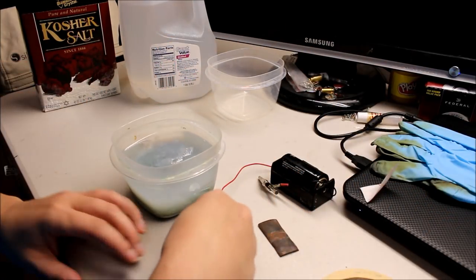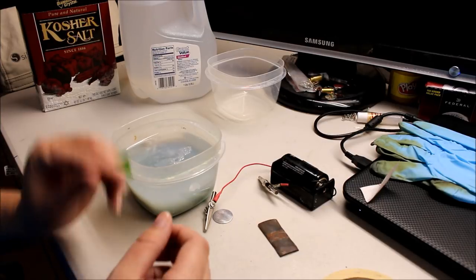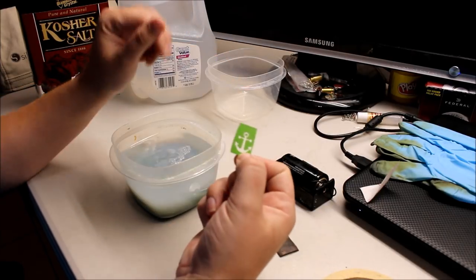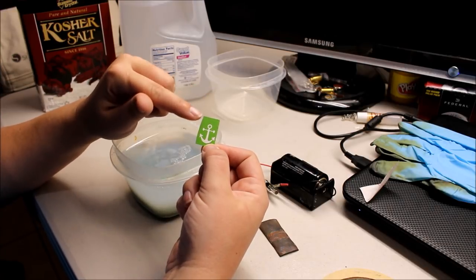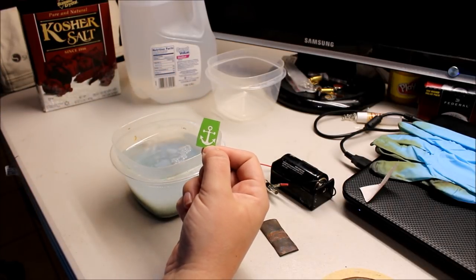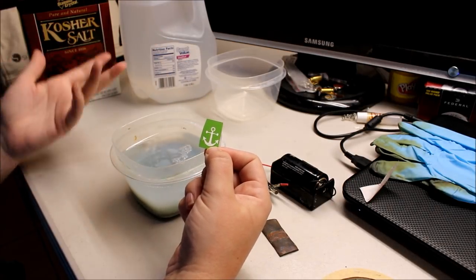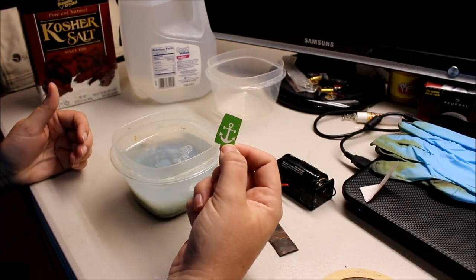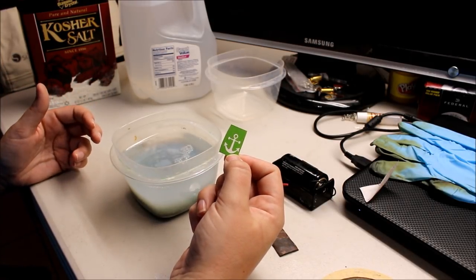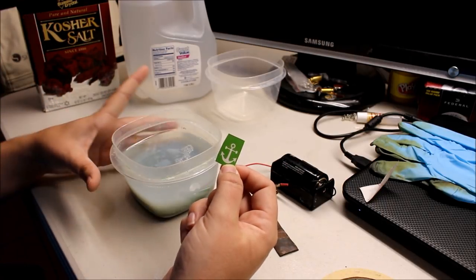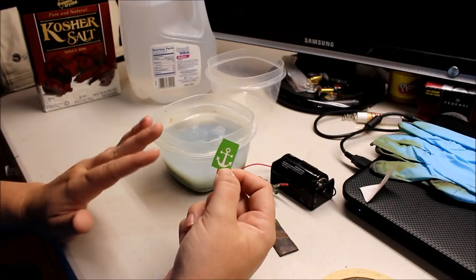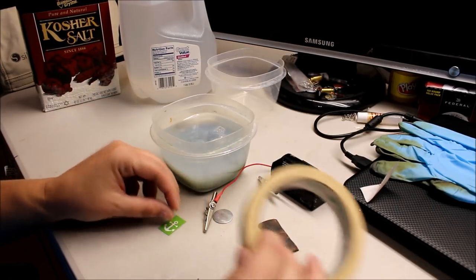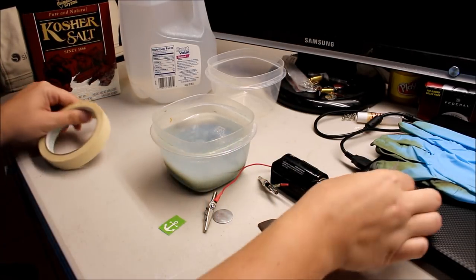So I've already cut my picture out, which is what the professional etchers call the resistance or something similar to that. I've already cut it out and weeded it. I have a Silhouette Cameo that I do it with. I use vinyl - you can use masking tape, some people do some kind of P&P method with their printer. I'm not that smart, so I just stick easy with the stickers.